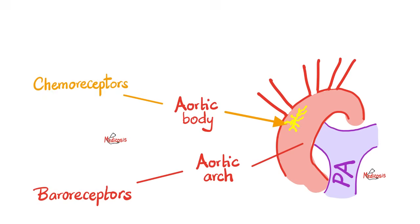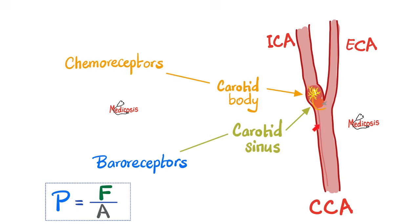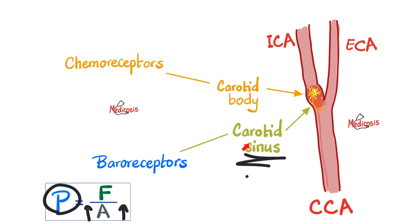The aortic arch has baroreceptors, whereas the aortic body has chemoreceptors — peripheral chemoreceptors. Similarly, the carotid sinus has baroreceptors, whereas the carotid body has chemoreceptors. How to remember which is which? Easy: the sinus is always wider than the body. Big means larger area, and area is related to pressure — so the one with the bigger area measures pressure. The sinus is baro, whereas the body is chemo.